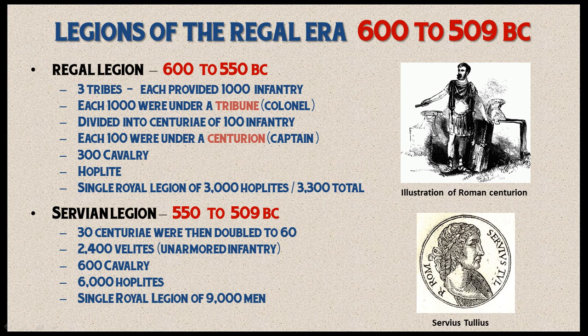There were three ancient tribes in the earliest recorded epochs of Roman history, and each tribe was expected to provide 1,000 infantry. Each unit of 1,000 infantry was commanded by a tribune, which is kind of like a modern-day colonel. The 1,000-man unit was also divided into centuries of 100 infantry, so there were 10 centuries for each 1,000 infantry. That unit of 100 infantry was under the command of a centurion, which equates to the modern-day rank of captain. There were also 300 cavalry attached to the early Roman Legion.